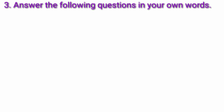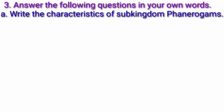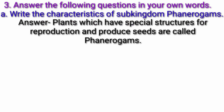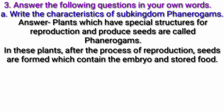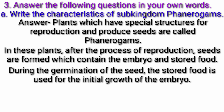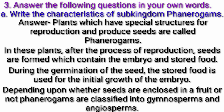Question 3: Answer the following questions in your own words. Question A: Write the characteristics of sub-kingdom Phanerogames. Answer: Plants which have special structures for reproduction and produce seeds are called Phanerogames. In these plants, after the process of reproduction, seeds are formed which contain the embryo and stored food. During the germination of the seed, the stored food is used for the initial growth of the embryo. Depending upon whether seeds are enclosed in a fruit or not, Phanerogames are classified into gymnosperms and angiosperms.